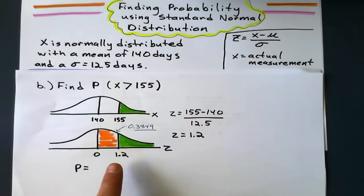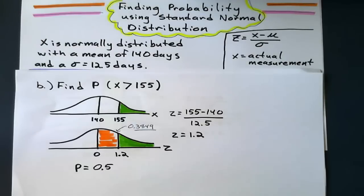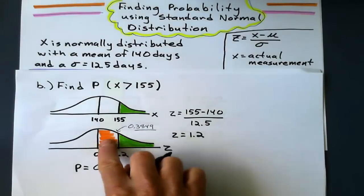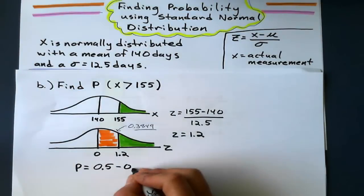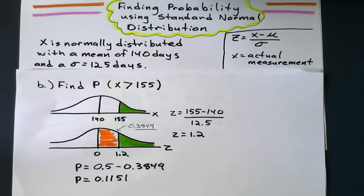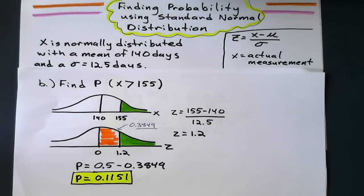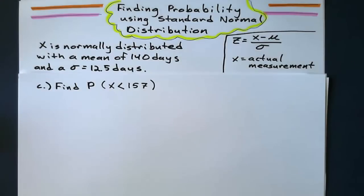So that is 0.3849. But I don't want that part. I want the green part. So remember, everything to the right of the mean is 0.5. Everything on that side is 0.5. So I'm going to say 0.5 minus the orange bit, which is 0.3849, will give me the green bit. So the tail is 0.1151 is my answer.